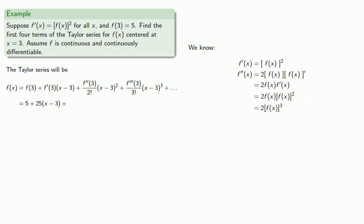And so we know what our second derivative looks like. And at 3, our second derivative has value, which gives us the next term in our Taylor series.